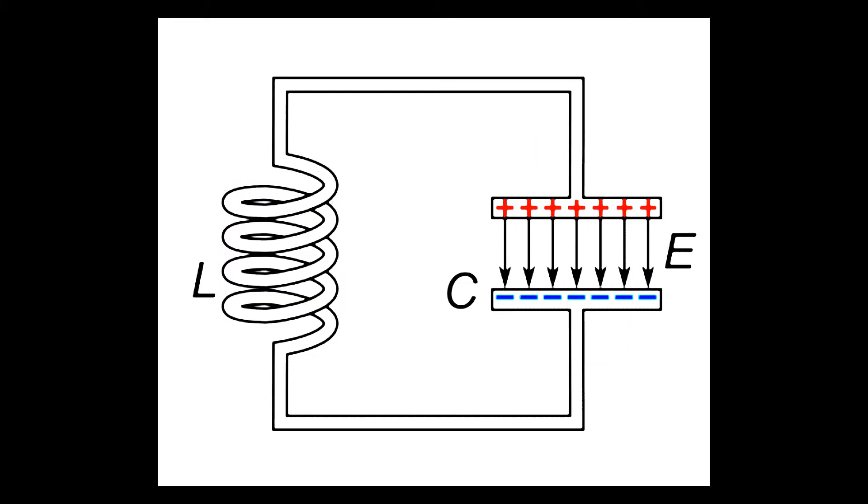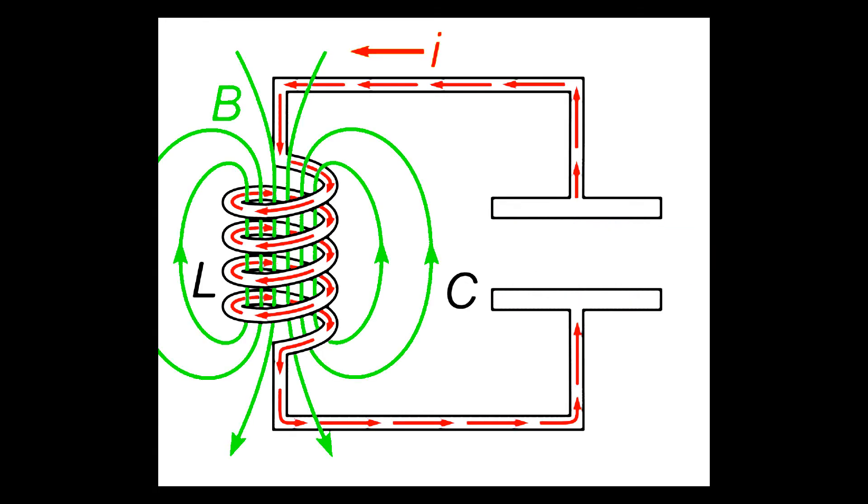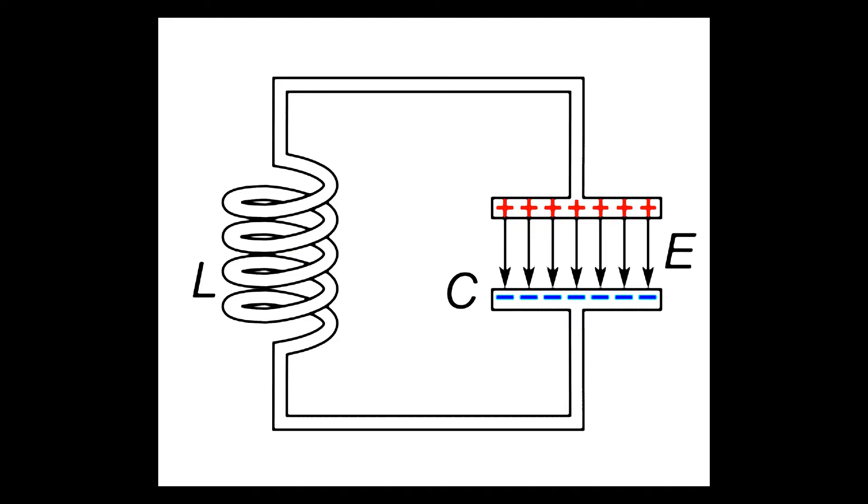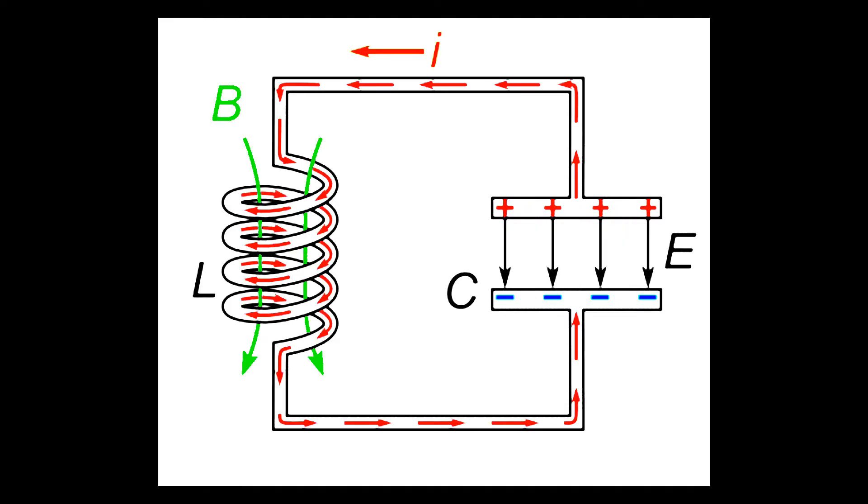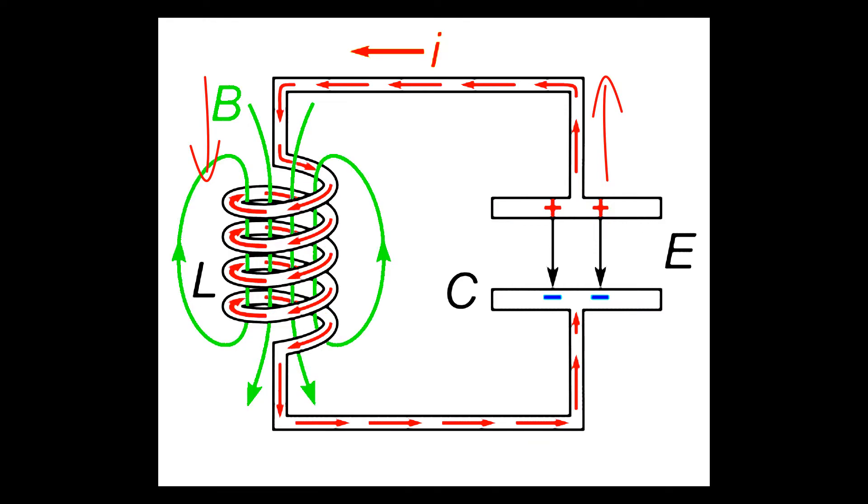Resonant circuits always consist of an inductor and a capacitor arranged in series or parallel. In this example the capacitor and the inductor are in parallel and the capacitor has some initial charge. Both capacitors and inductors are passive energy storage devices where the capacitor has the ability to store energy in the form of an electric field and the inductor has the ability to store energy in the form of a magnetic field. Given that this is a closed circuit, current is going to flow from the positively charged plate of the capacitor through the inductor to the negatively charged plate of the capacitor.